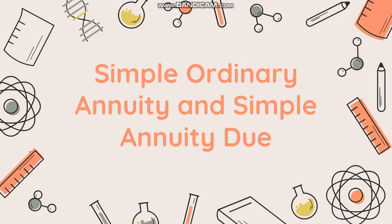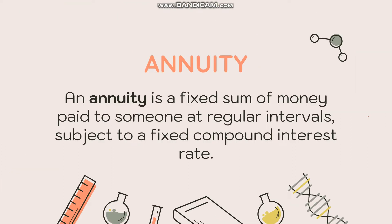For today's lesson we will be discussing simple ordinary annuity and annuity due. An annuity is a fixed amount of money paid to someone at regular intervals, subject to a fixed compound interest rate. Examples include house loans, house rent, investments, insurance, or tuition fees — as long as you are paying a fixed amount at regular intervals subject to compound interest.